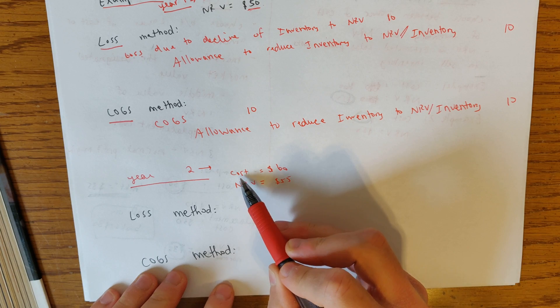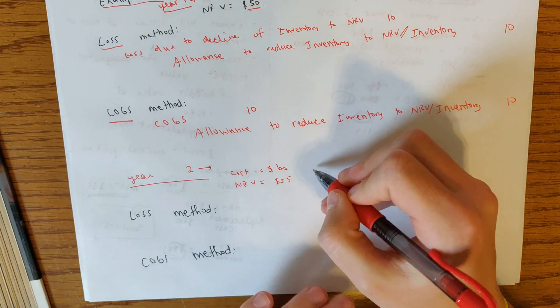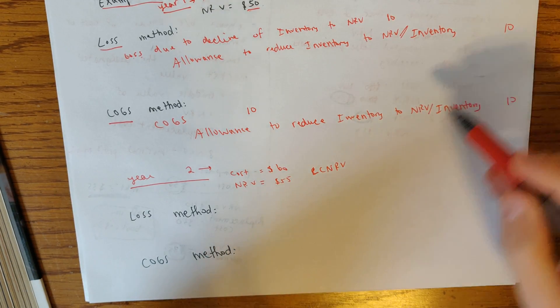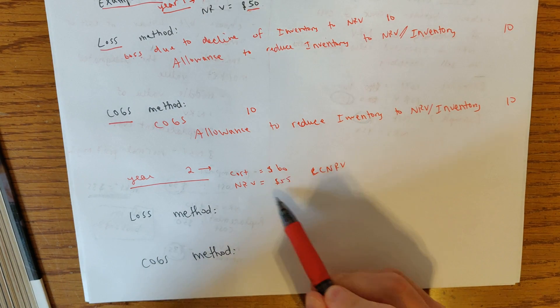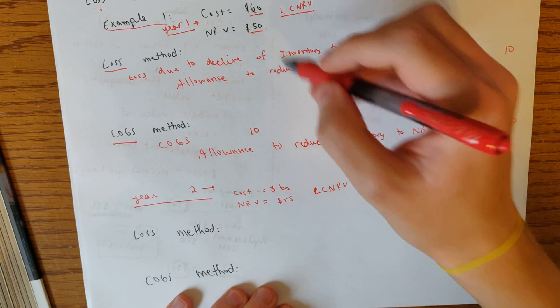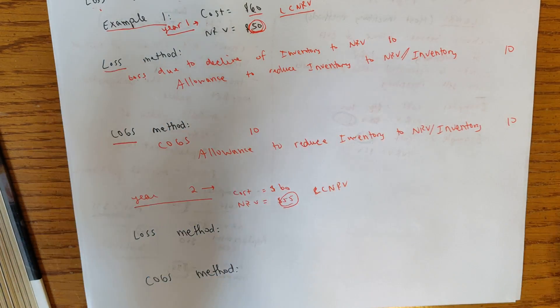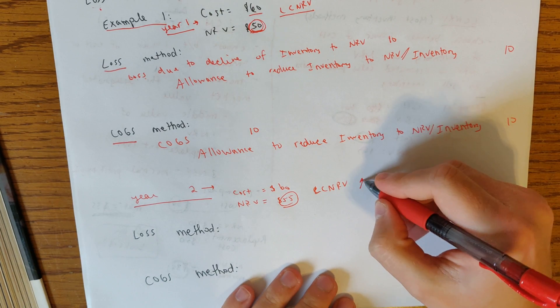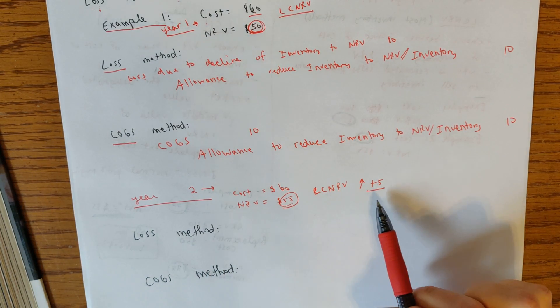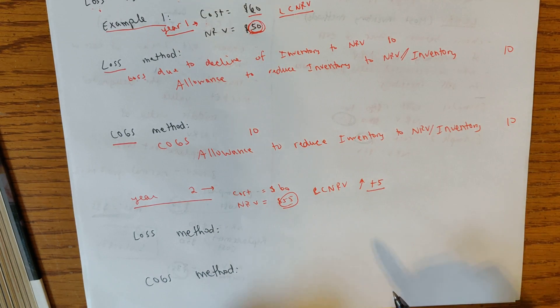So let's see. So I changed the facts. So I have year two. Cost is still 60. Again, we're doing LCNRV. Just to refresh, LCNRV. Cost, $60. Net realizable value, 55. So as we can see, if we were to compare to year one, year one's at the top here, $50 is the NRV. Now the NRV is 55. So the NRV has gone up by five. And so what has happened is that our net realizable value is now five higher than it was last year.